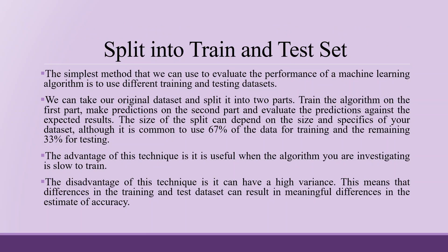The first method is the train and test set split. The simplest method is to use different training and testing datasets — take the original dataset, split it into two parts, train on the first part, make predictions on the second, and evaluate against expected results. It is common to use 67% for training and 33% for testing, though 70/30 or 80/20 splits are also used.